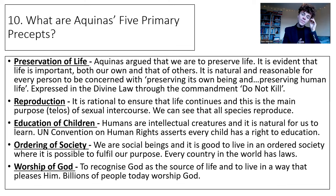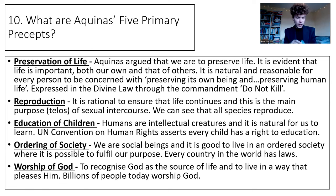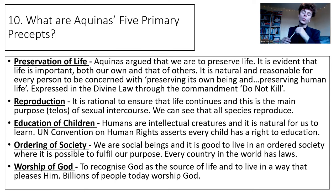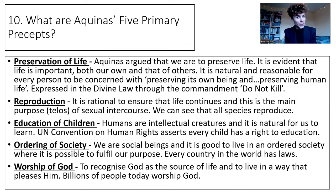The five primary precepts are absolute, unchanging and binding — as Cicero would say — upon all people at all times. Aquinas believed there are five primary precepts that all people must follow at all times; if they do, they will move towards good and avoid evil. The first of his five primary precepts is the preservation of life. He argued: "It is evident that life is important, both our own and that of others. It is natural and reasonable for every person to be concerned with preserving their own being and preserving human life." We see this expressed in the divine law through the commandment: do not kill.